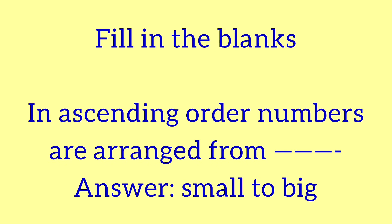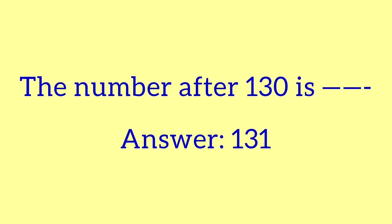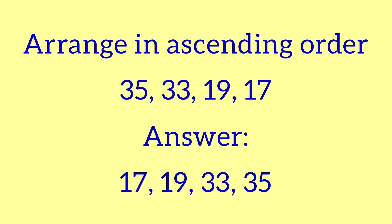Fill in the blanks. In ascending order, numbers are arranged from small to big. The number after 130 is 131. Here is a set of numbers to arrange in ascending order: 35, 33, 19, and 17. Which number is the smallest? 17. The numbers 19 and 17 have the same digit in the tens place, so we check the ones place — 9 and 7. Since 7 is smallest, 17 is the smallest number.